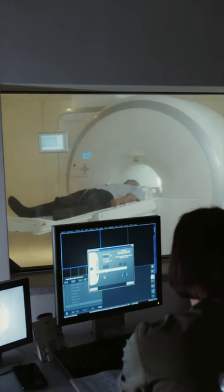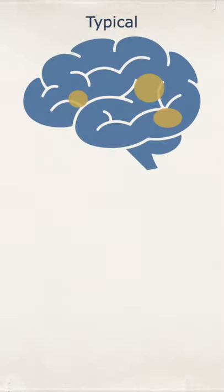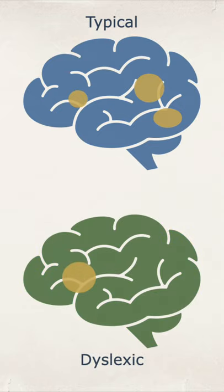When we look at the brain activity of typical readers, here are the areas within the brain that light up. In contrast, in dyslexic readers you see a stronger activation in frontal areas of the brain.